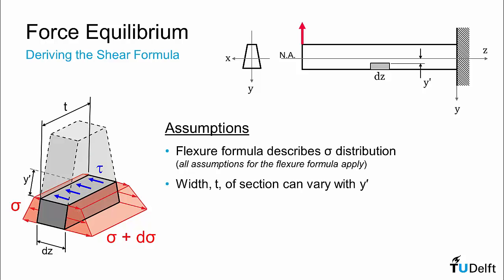We're also going to allow in this analysis the width, or as it's labeled here t, of the section can vary with our vertical position in the beam. Now, you have to remember that for the flexure formula, that applied only to symmetric beam sections. There has to be symmetry across the y plane. But we will allow the width to vary with vertical distance.